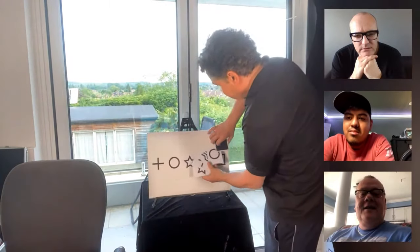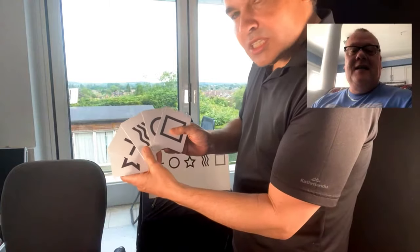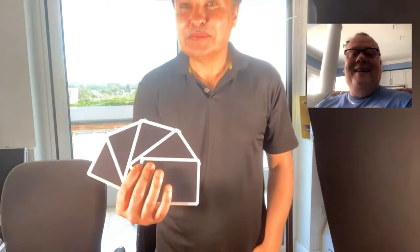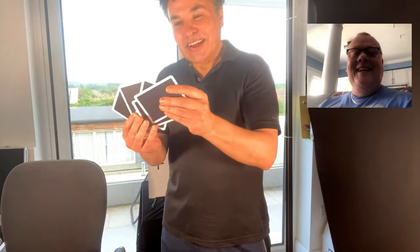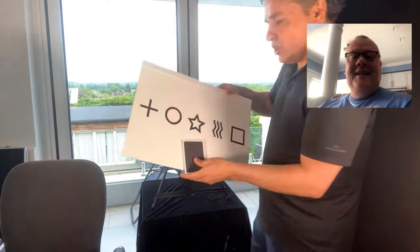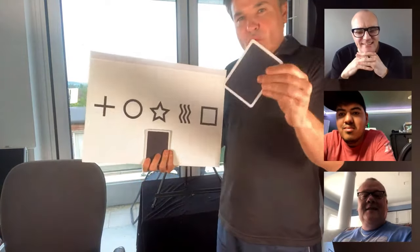What's the name of the other spectator? — Jeff. Jeff, please name one of these symbols. — Square. I'm going to give them a little mix, and what I'd like you to do is think about whether the square is in position one, two, three, four, or five. This is called 'Any Symbol Any Position,' or ASAP. — The square in position four. Which is exactly where the square is.